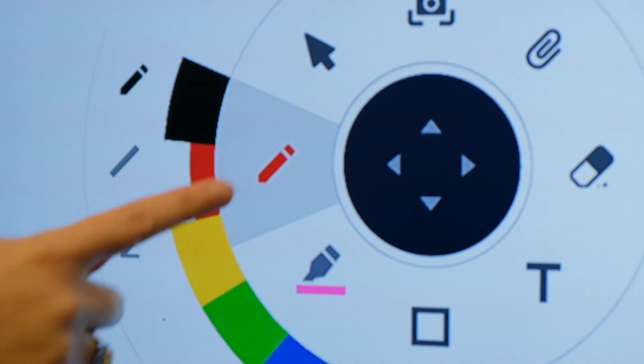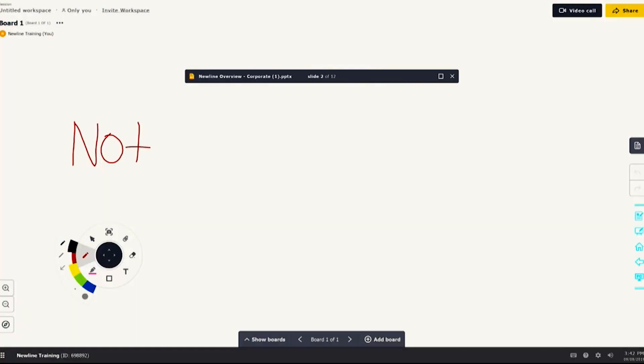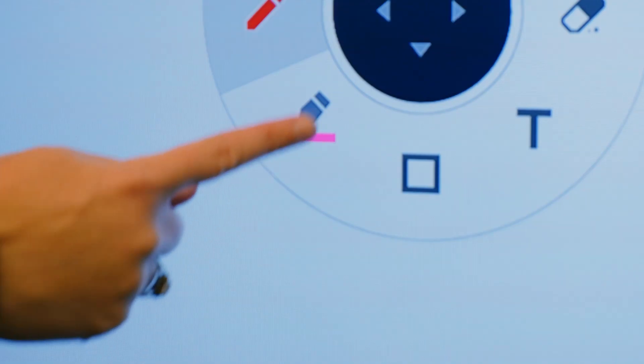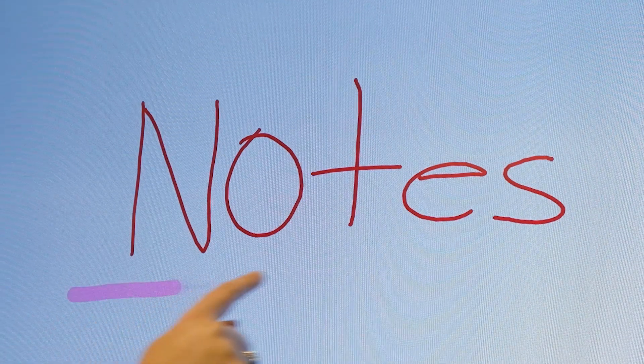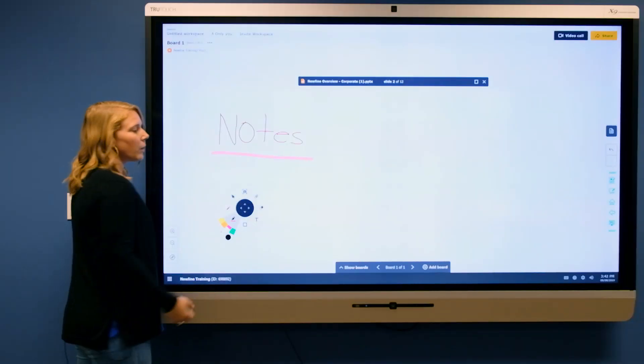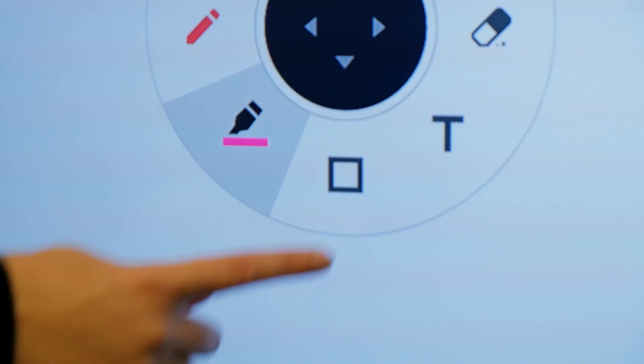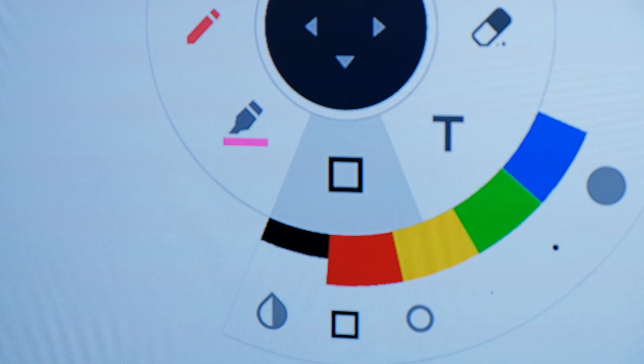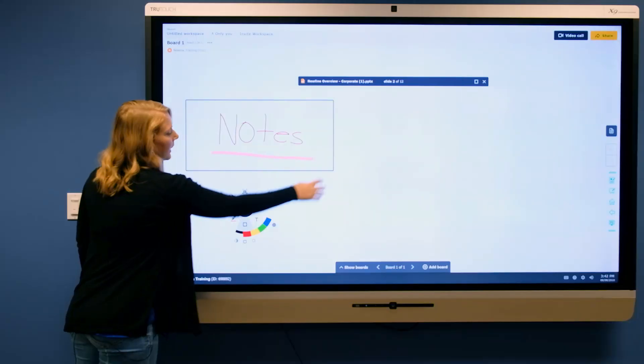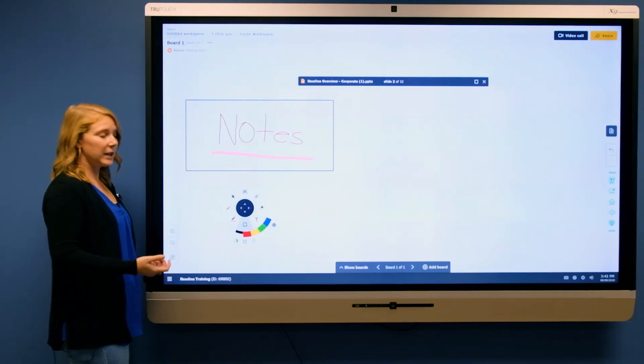You have a pen, a highlighter, you also can insert shapes, as well as text and images.